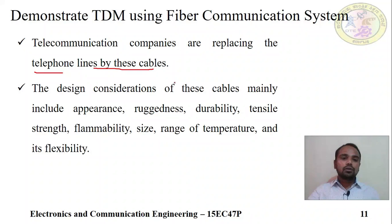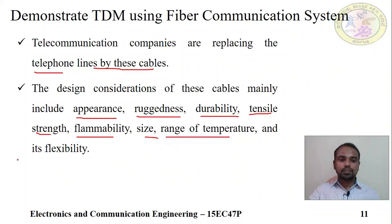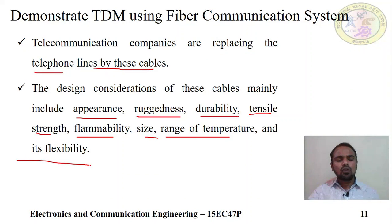Because of more advantages compared to disadvantages, the telecom industry is replacing telephone lines with fiber optic cable. Fiber optic cable also has advantages due to its appearance and ruggedness, durability, tensile strength, flammability resistance, size, temperature range, and flexibility. Because of these features, optical fiber is more often used in the telecom industry compared to copper cable.